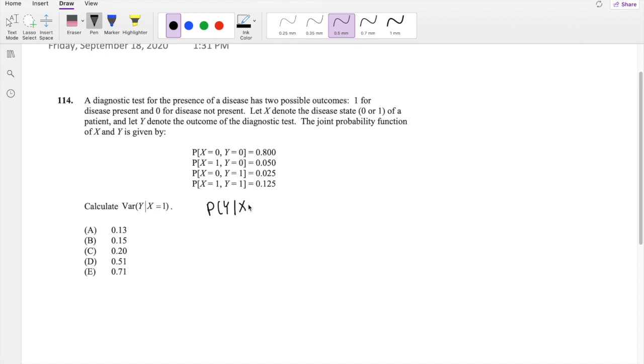The conditional probability of Y given X equals 1 - I can break this down into the probability that Y equals some little y and X equals 1, over the probability that X equals 1. Alright, so let's start off.